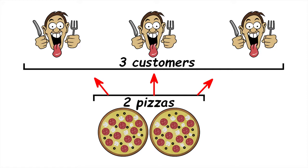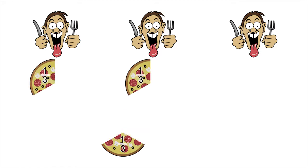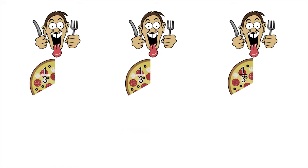Let's deal with one pizza at a time. There are three customers, so let's divide the first pizza up into three equal sized slices. That way the first pizza gets shared out equally. Each customer gets exactly one third of the first pizza.